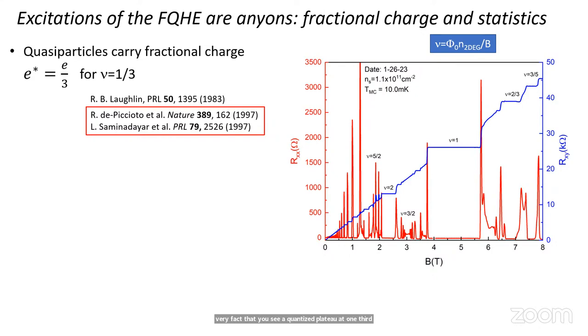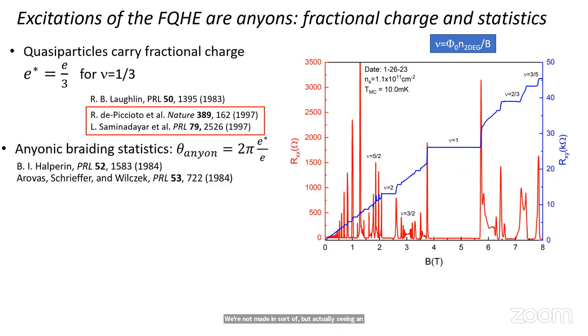Sometimes theorists will say, well, the very fact that you see a quantized plateau at one-third means that you have fractional charge and fractional statistics. Yeah, maybe, sort of. But actually seeing it in an experiment is another matter altogether. And the anionic braiding statistics for the Laughlin states, the statistical phase is given by two pi times the ratio of the effective charge to the bare electron charge. Again, was known in the earliest days of the fractional quantum Hall effect, the 80s. But I'm giving you a talk about it now in 2024, so there must have been some delay there, too.